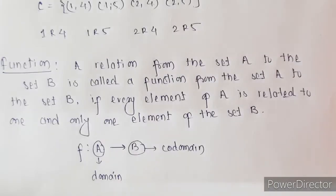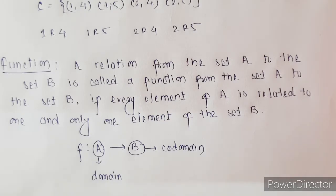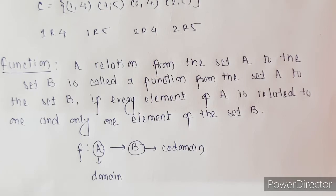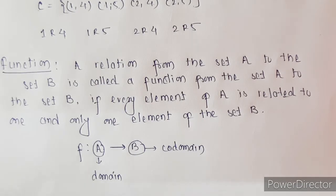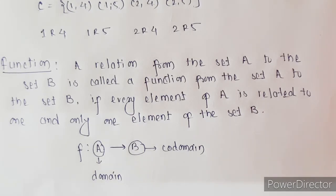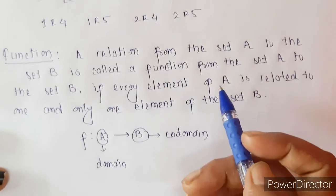Next is function. A function is nothing but a relation from set A to set B. A relation from set A to set B is called a function from A to B if and only if every element of A is related to one and only one element of B. Then only we can say it is a function from set A to set B.